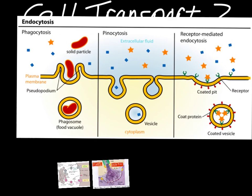There are two different types of transport through the membrane that you need to know. The first one is called endocytosis. The prefix 'endo' tells us that we have things coming into the cell, so this is the cell picking things up from outside. There are three different ways this can happen. One style is called phagocytosis, which is for very, very large things — usually bringing in food particles. So we end up with large molecules, generally food molecules.